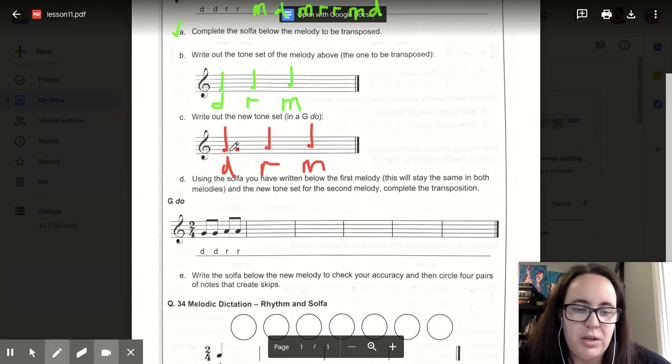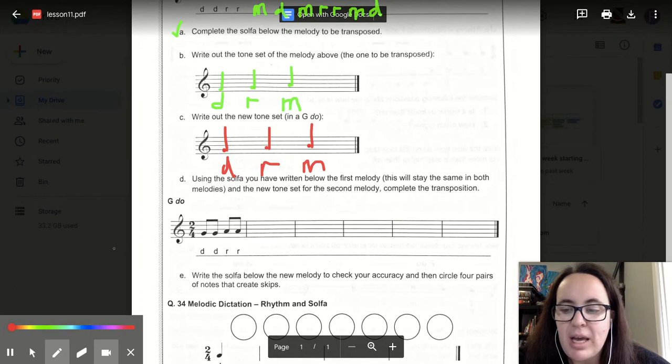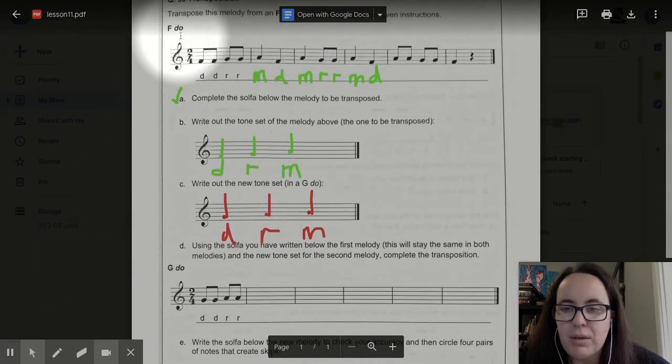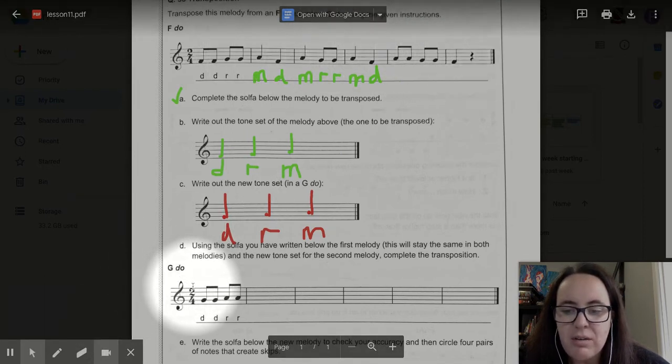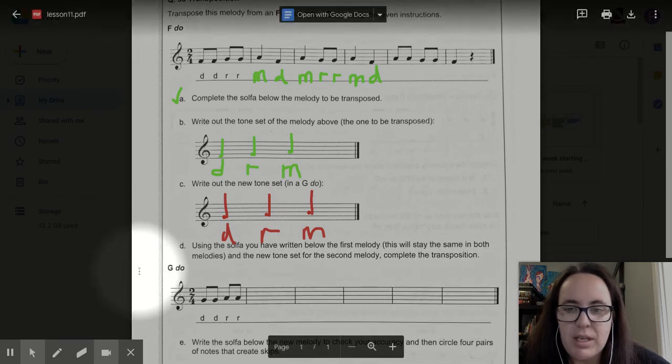So once you've written your G tone set and make sure you're being very particular about where your sounds are on the stave, you now need to transpose the melody that we had up above in F DO, this melody here. You are now transposing it on the stave and writing it here.